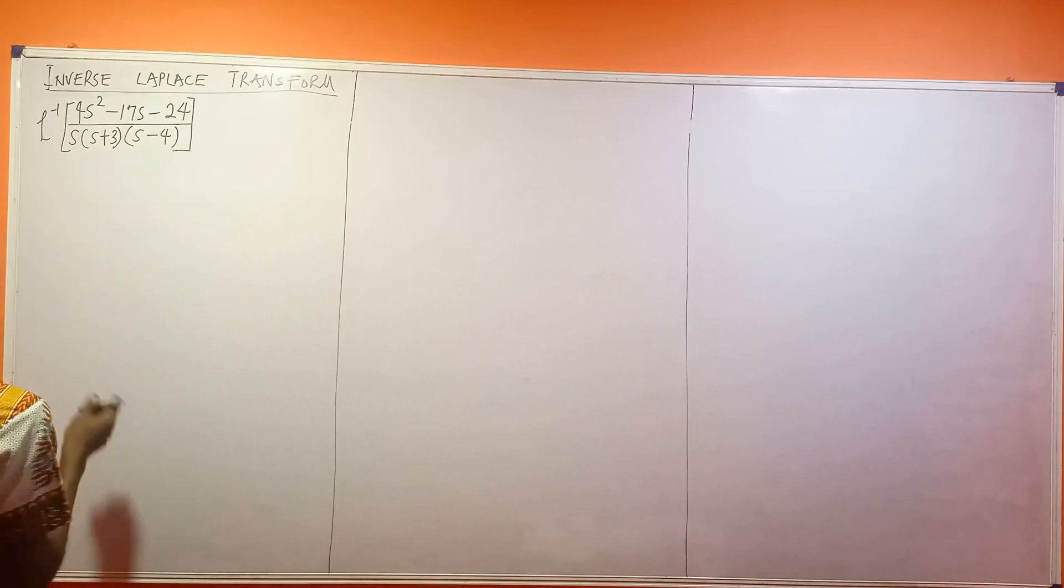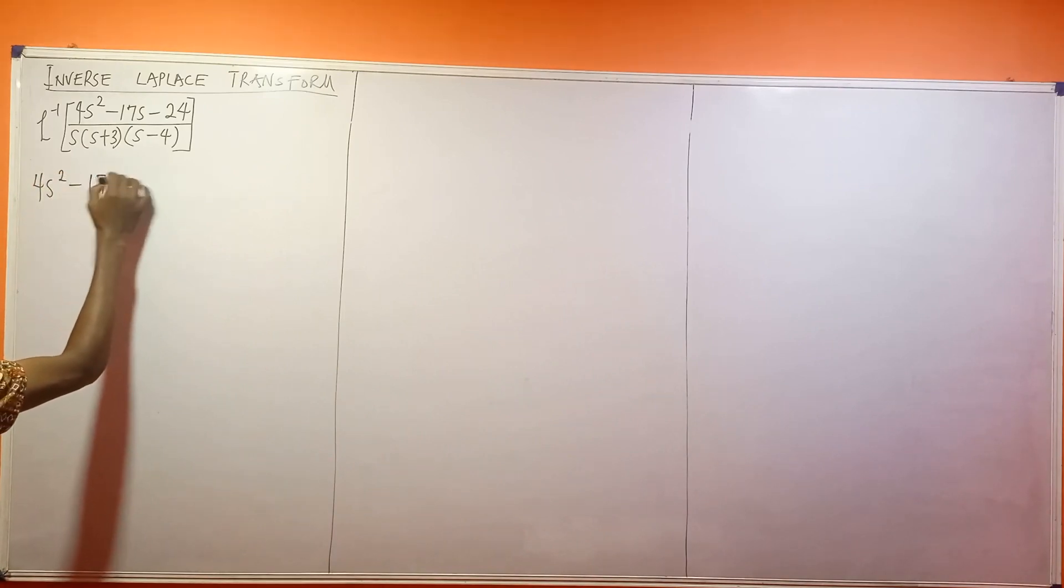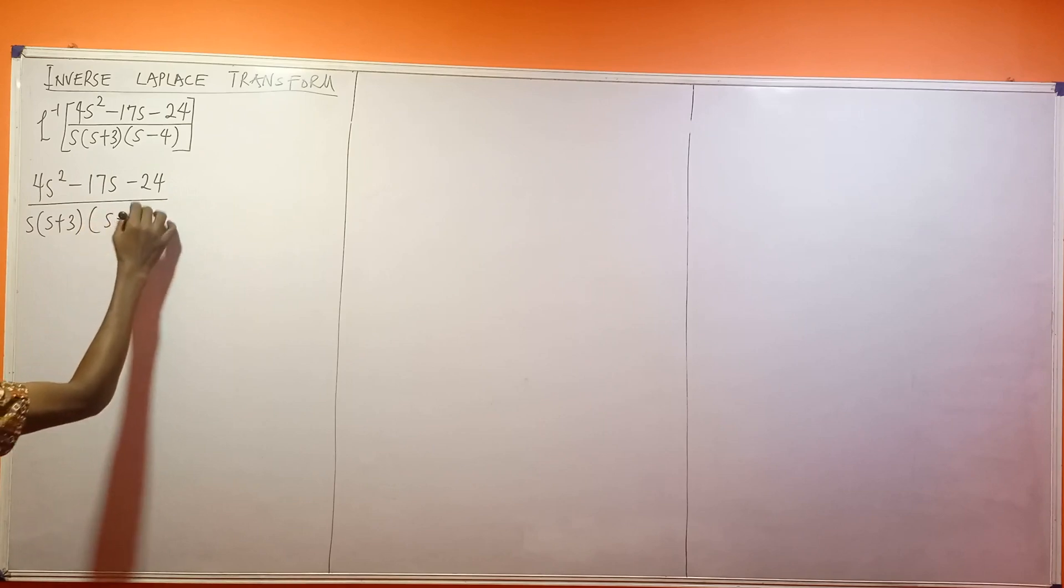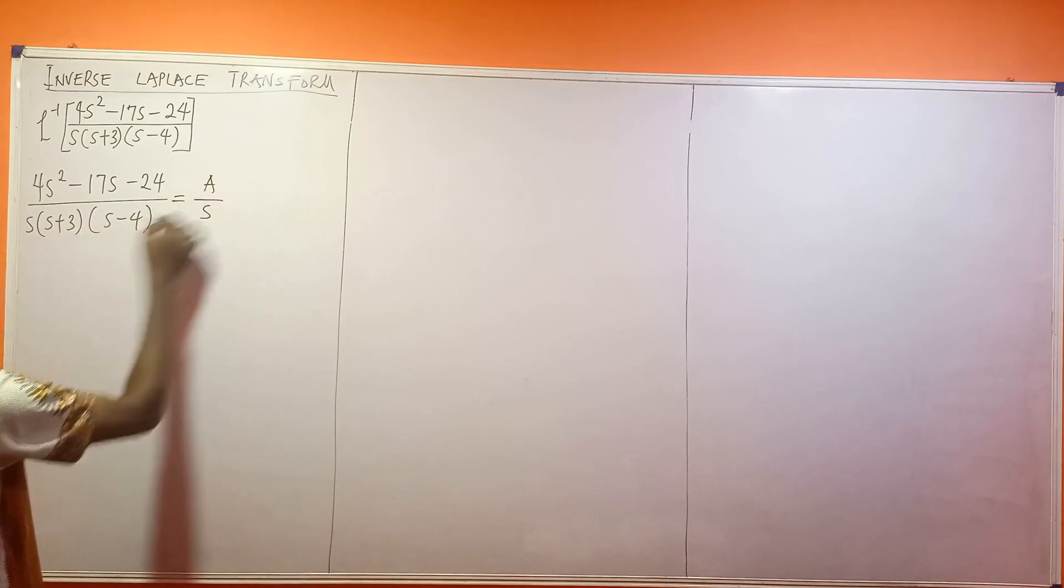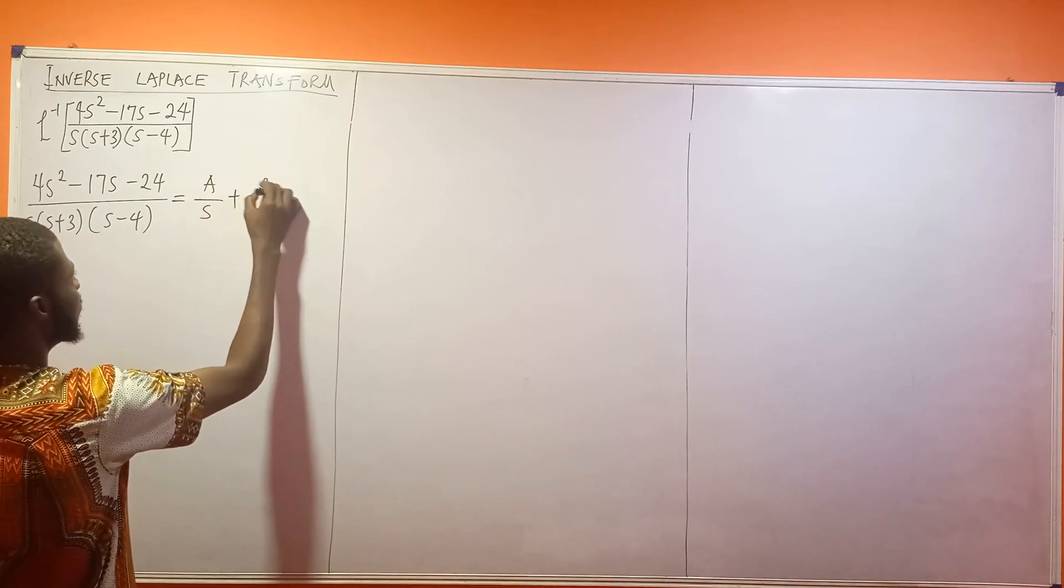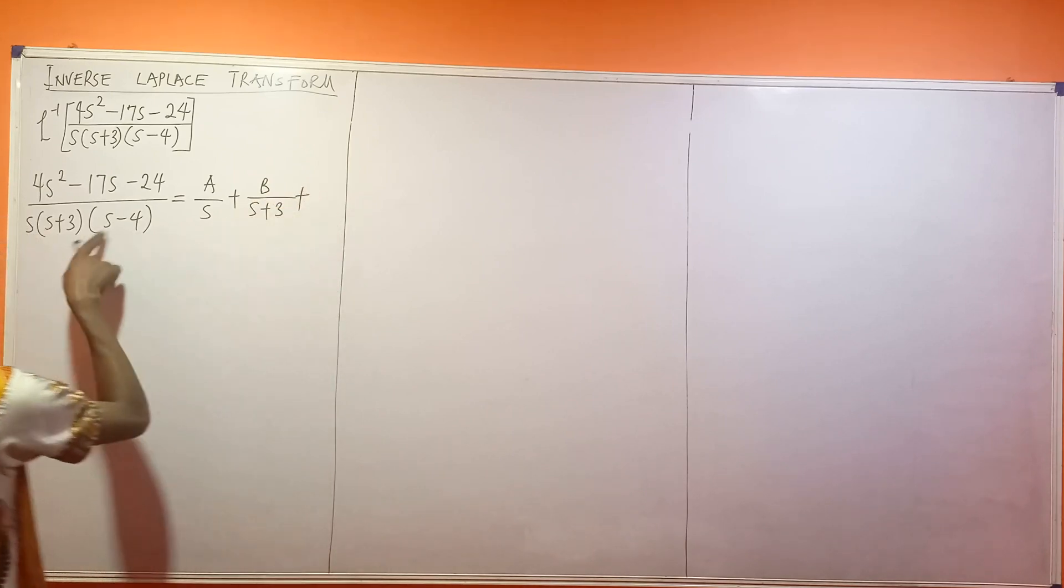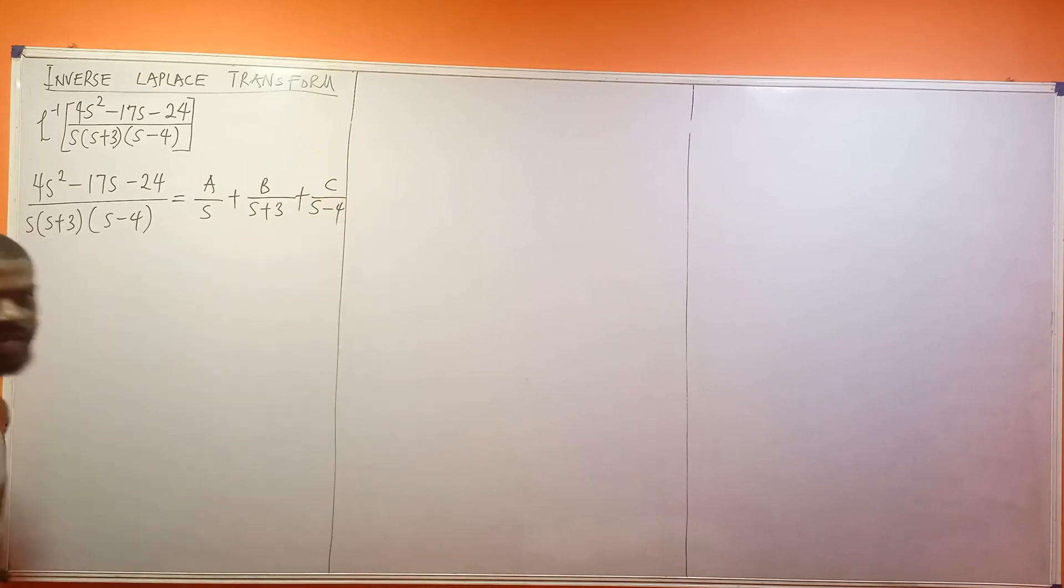The first thing I'll be doing is 4s squared minus 17s minus 24 divided by s bracket s plus 3 bracket s minus 4. This will give me A over s, because that is the first factor at the bottom, plus B over s plus 3, then plus C over s minus 4.